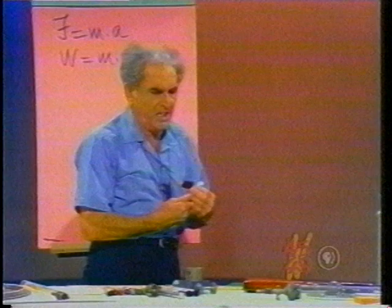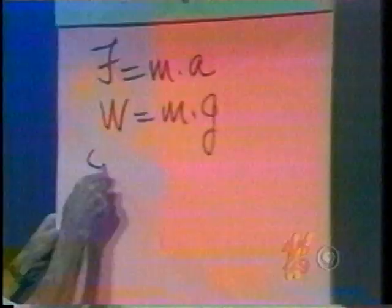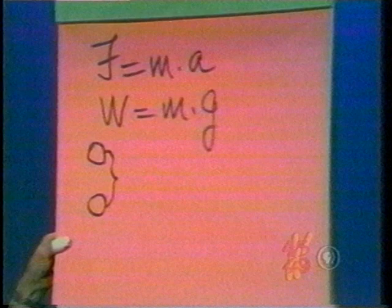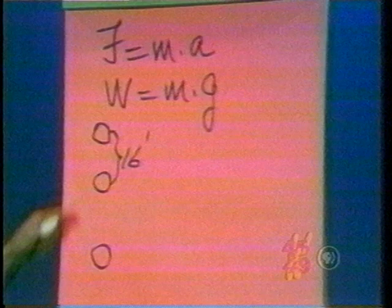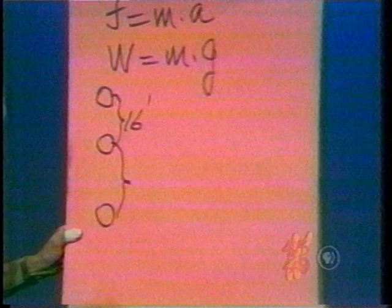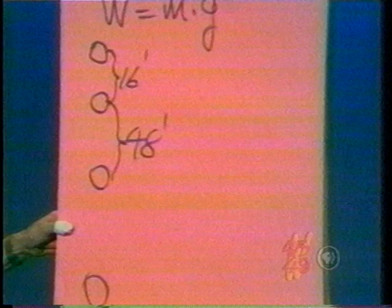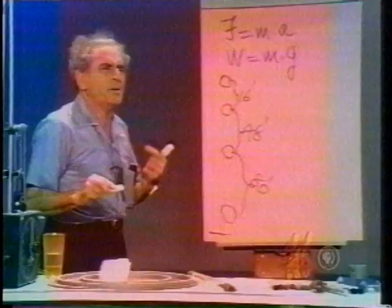When we study a falling body dropped from rest, supposing it starts right there. One second elapses and we find it has fallen 16 feet. Now let another second elapse — how far would it fall in the second second? During the second second, it would fall 48 feet. Now let it fall for a third second, and we find 80 feet.